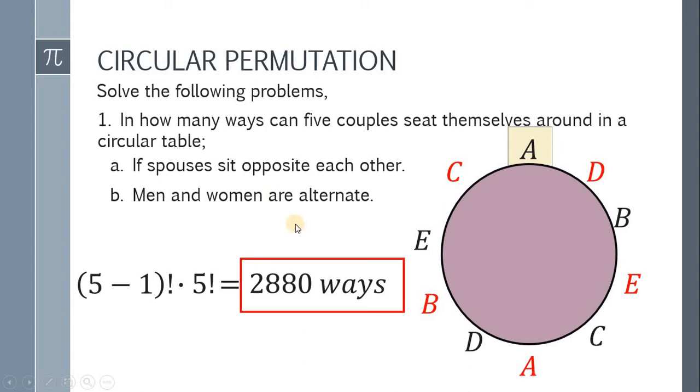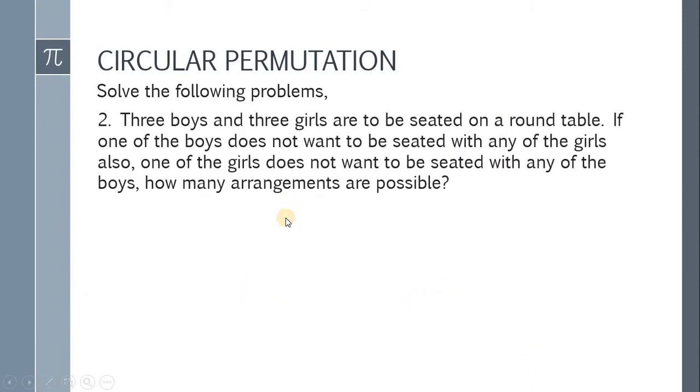Now let's move on to example number two. Three boys and three girls are to be seated on a round table. If one of the boys does not want to be seated with any of the girls, also one of the girls does not want to be seated with any of the boys, how many arrangements are possible?